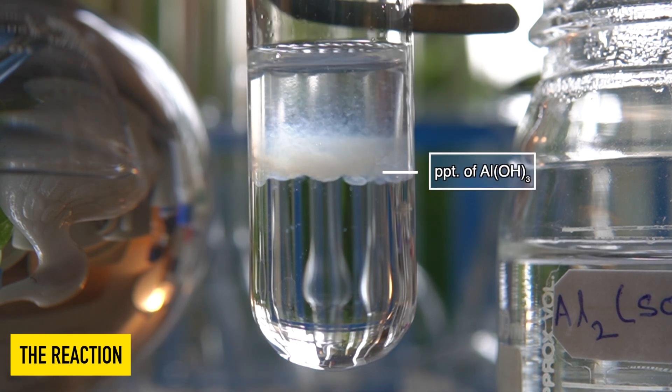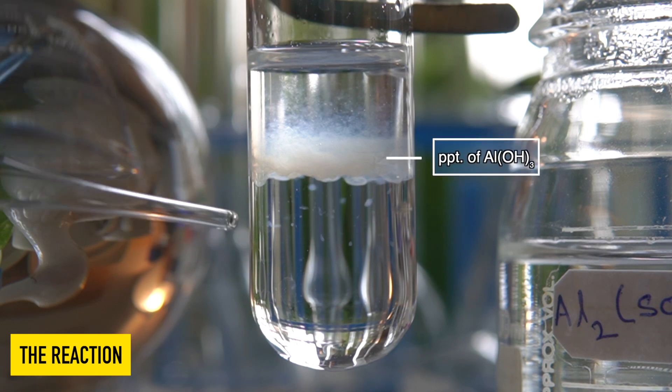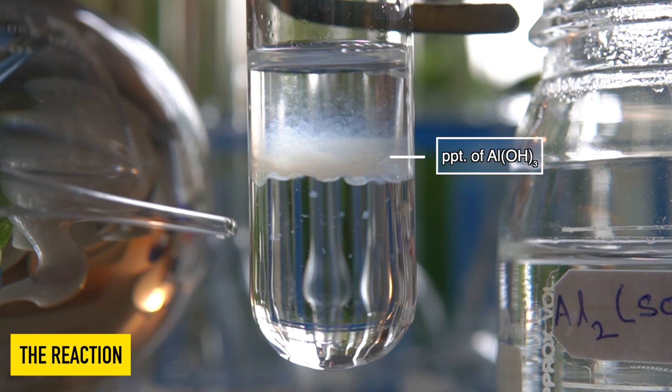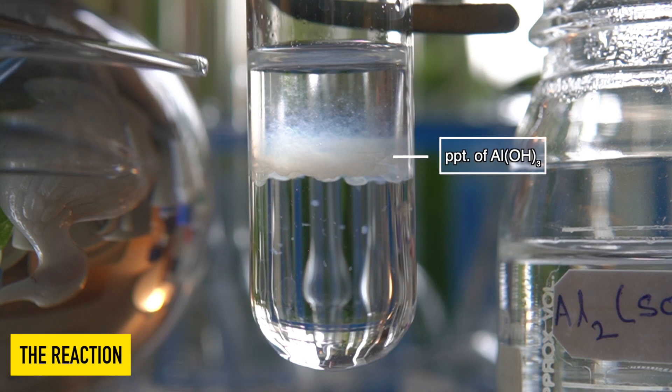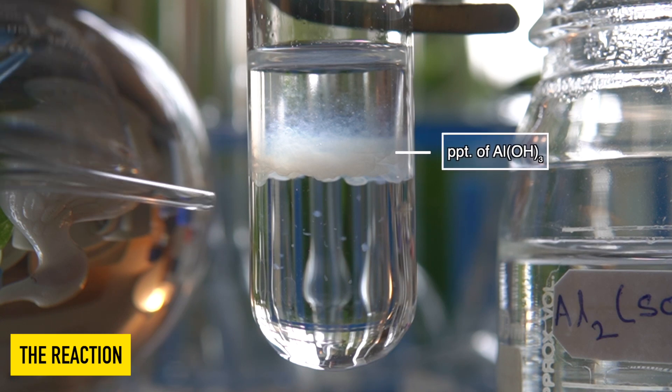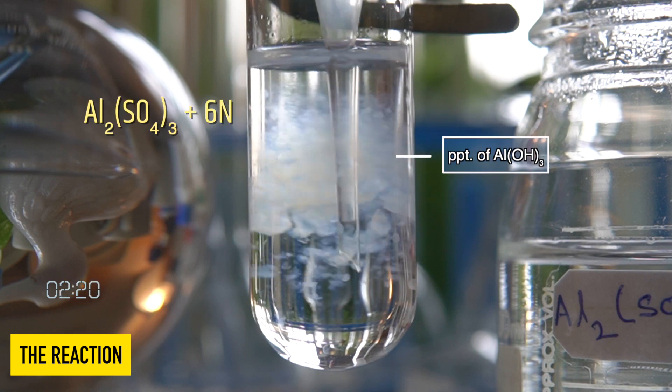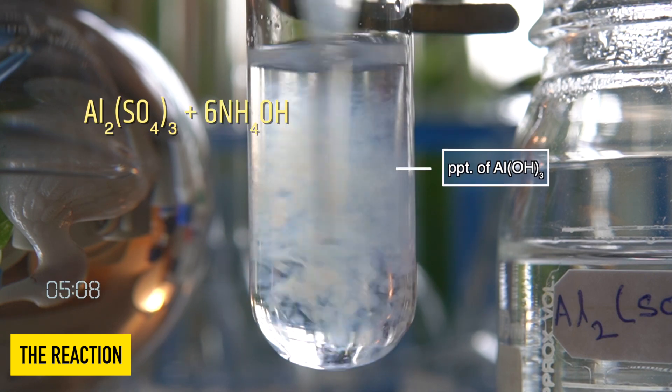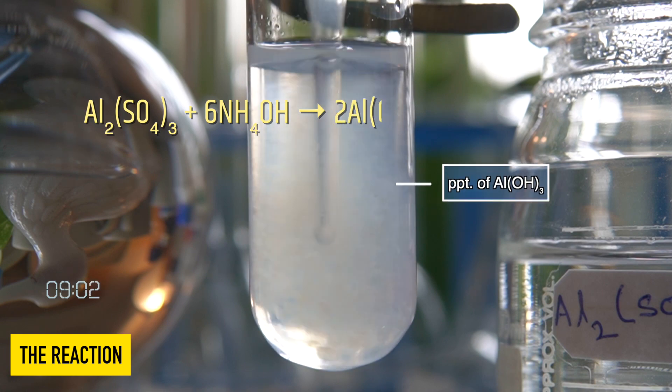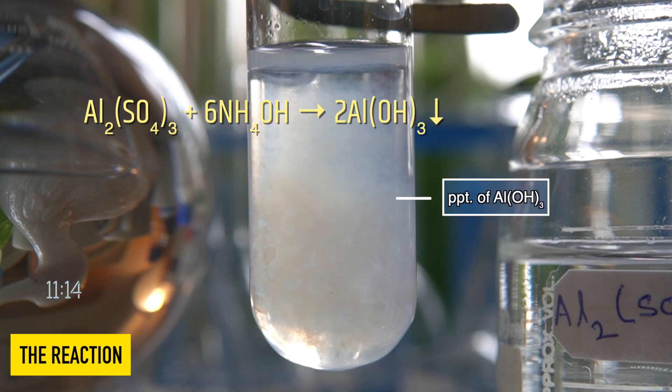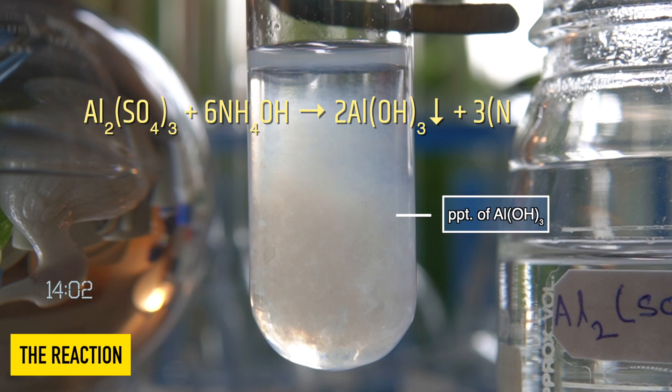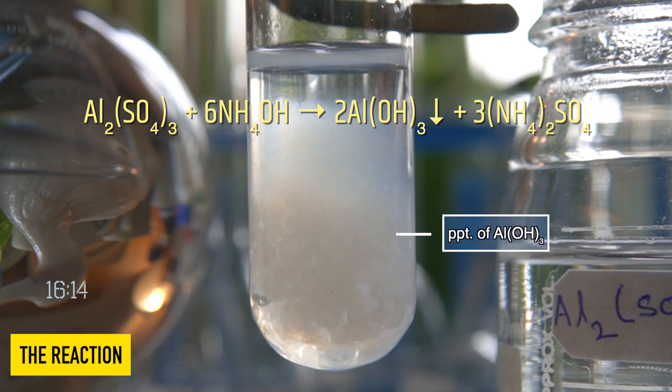The gelatinous white precipitate that has been formed inside the test tube is nothing but aluminium hydroxide. In this reaction, aqueous solution of aluminium sulphate reacts with ammonium hydroxide to produce a gelatinous precipitate of aluminium hydroxide along with ammonium sulphate.